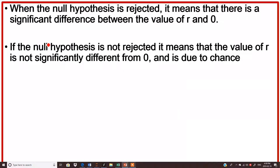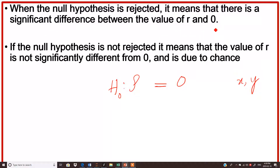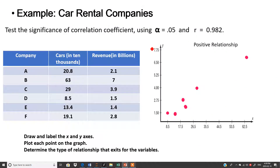When the null hypothesis is rejected — that is, we reject the claim that ρ equals 0 — it means there is a significant difference between the value of r and zero. If it is not rejected, it means the value of r is not significantly different from zero and is due to chance. These are the two important outcomes of the hypothesis test.